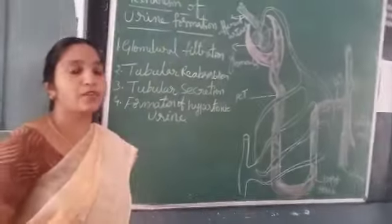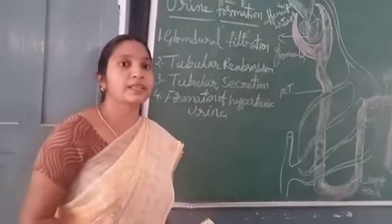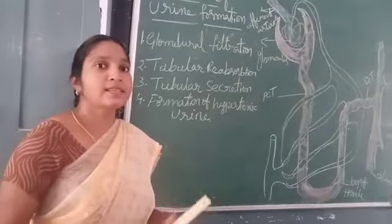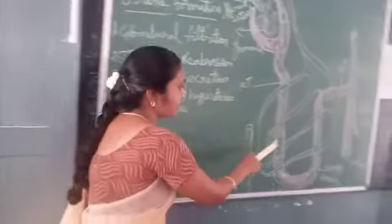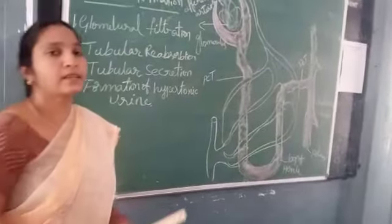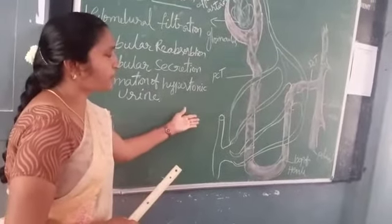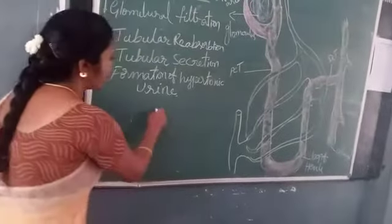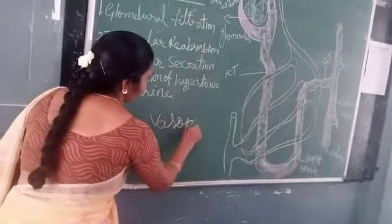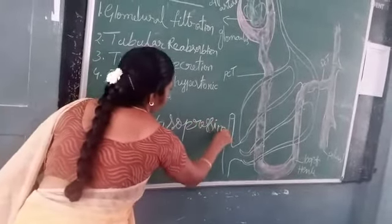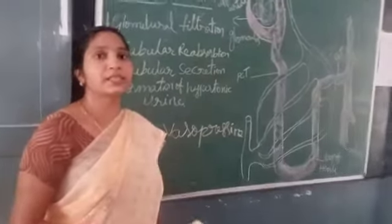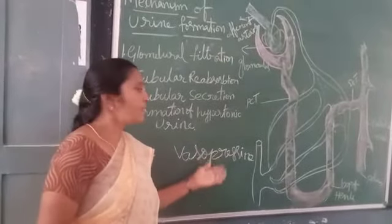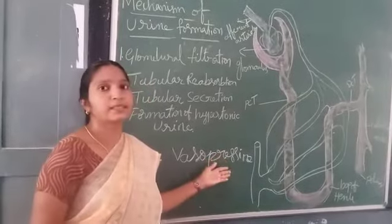Here 75% of water content filtered in the nephric filter are reabsorbed. And 10% of water content goes into loop of Henle. Further concentration of urine takes place in the collecting tube in the presence of vasopressin hormone. This hormone is secreted when concentrated urine is to be passed out.